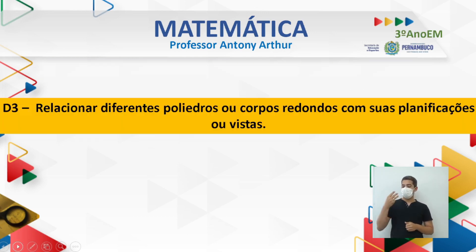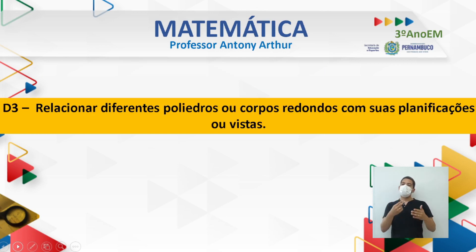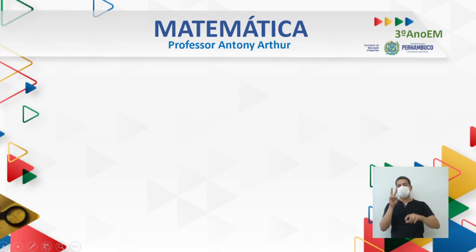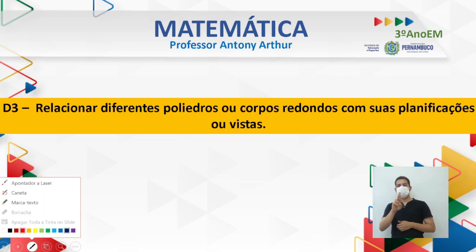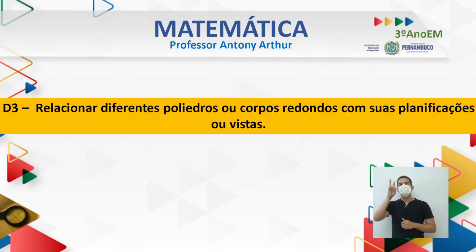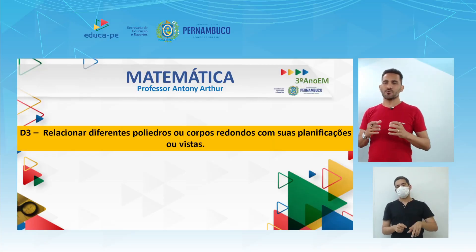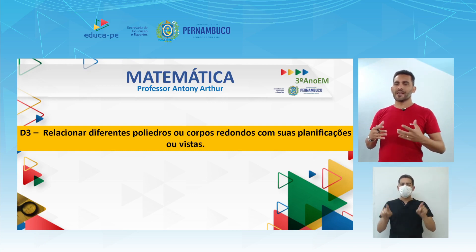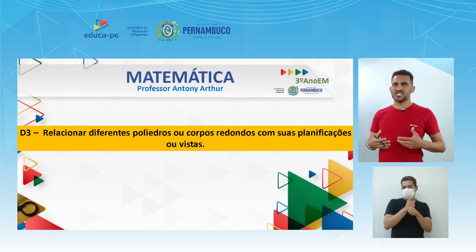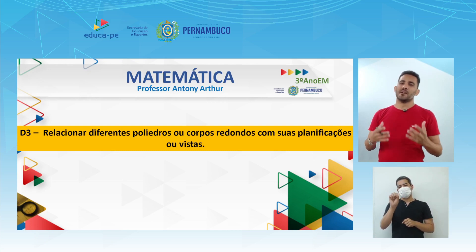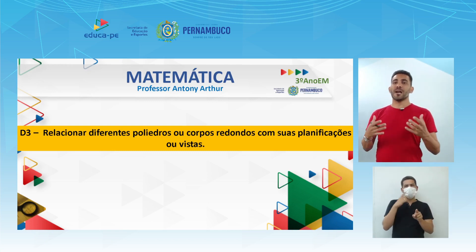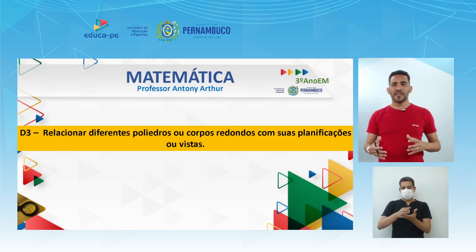O descritor 3 diz: relacionar diferentes poliedros ou corpos redondos com as suas planificações ou vistas. Quando a gente fala de poliedros, temos que lembrar da relação de Euler e o que é um poliedro, porque nem todo sólido pode ser considerado um poliedro. Os corpos redondos são qualquer sólido que tenha parte arredondada — os mais famosos são os cilindros, as esferas e os cones.